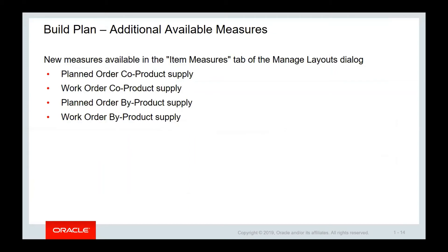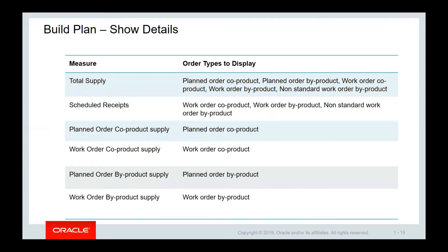New measures have been added to the Item Measures tab of the Manage Layouts dialog in order to support process manufacturing. With the addition of the process manufacturing order types and measures, the Show Details button has been enhanced to show the corresponding order types when the user has selected any of those measures.